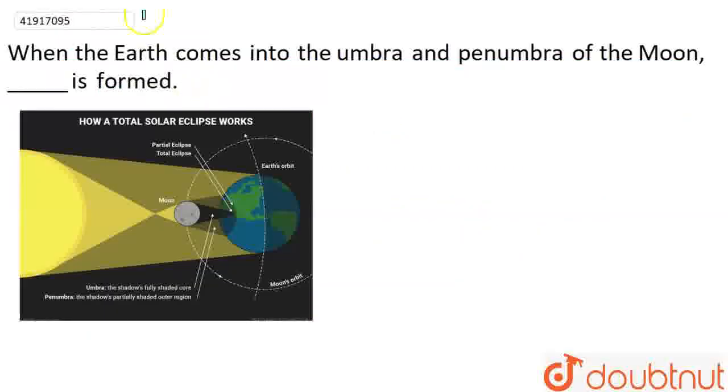Hello everyone, so the question is: When the earth comes into the umbra and penumbra of the moon, dash is formed.